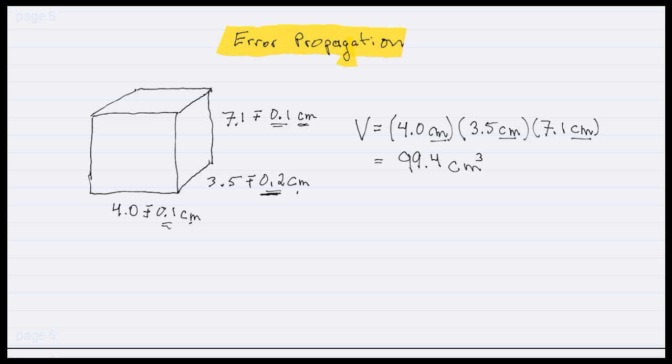Now this is the volume, but there's some uncertainty about the volume. What is the error of this number? How well do we know this, how accurate do we know this? So we need to figure out what the error is in the volume, given the errors in these measurements.